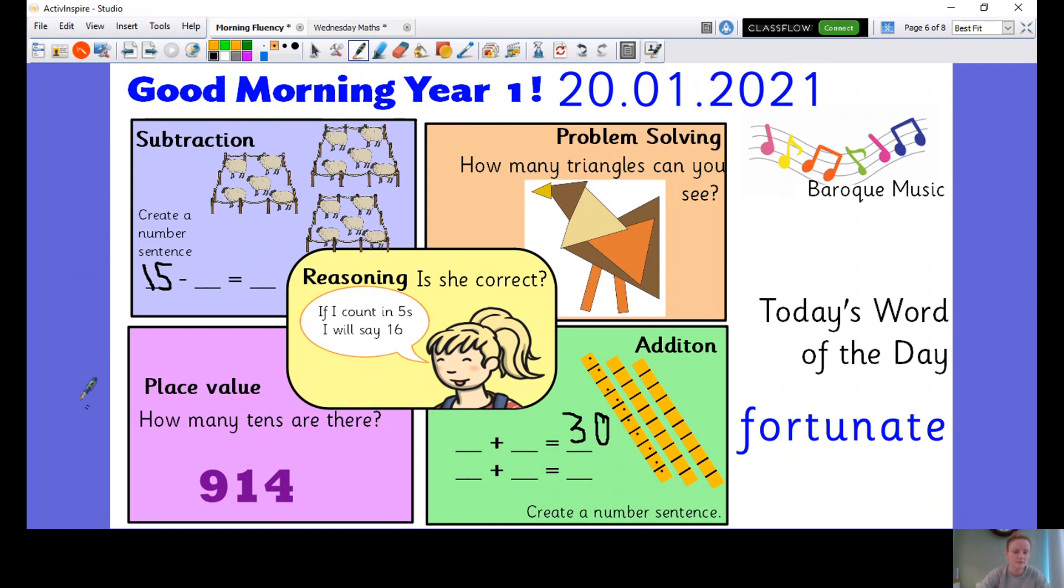Now this is a tricky one because we haven't really done hundreds. But this number is 914 because this is our teen number. So what I want you to do is tell me how many tens there are. Are there nine tens? Are there one ten? Or are there four tens? Now remember, you might not know what the hundred column is, but I'll just put a H there. A hundred. But you do know the tens and ones. So see if you can work out which one is the tens column.